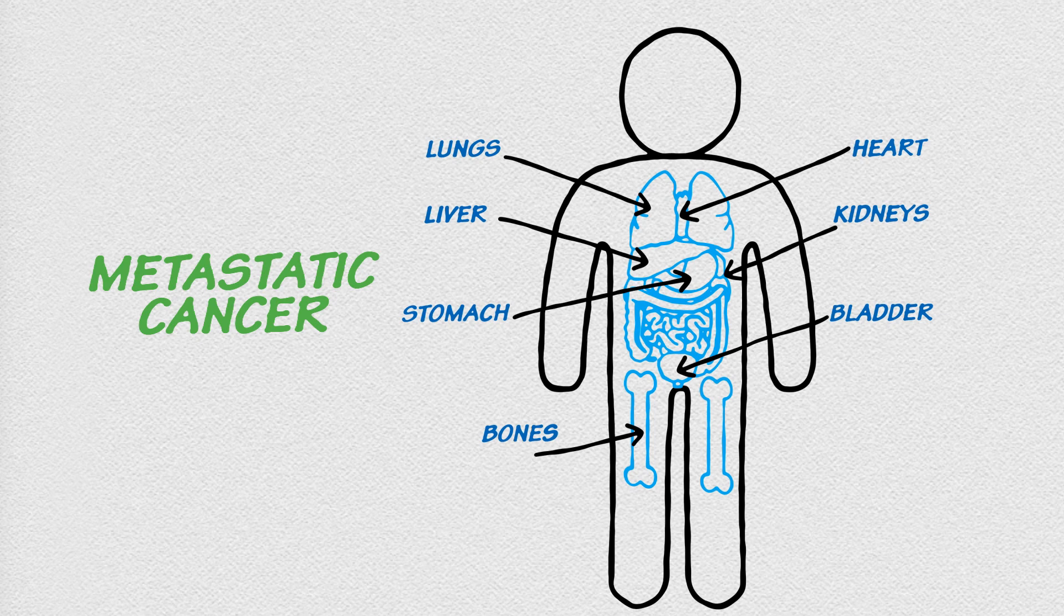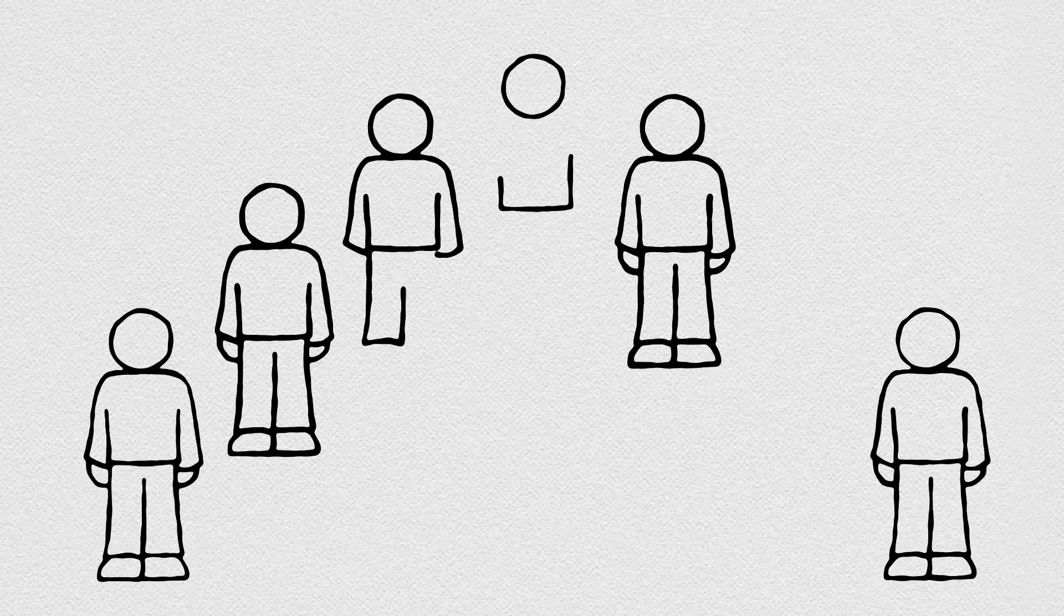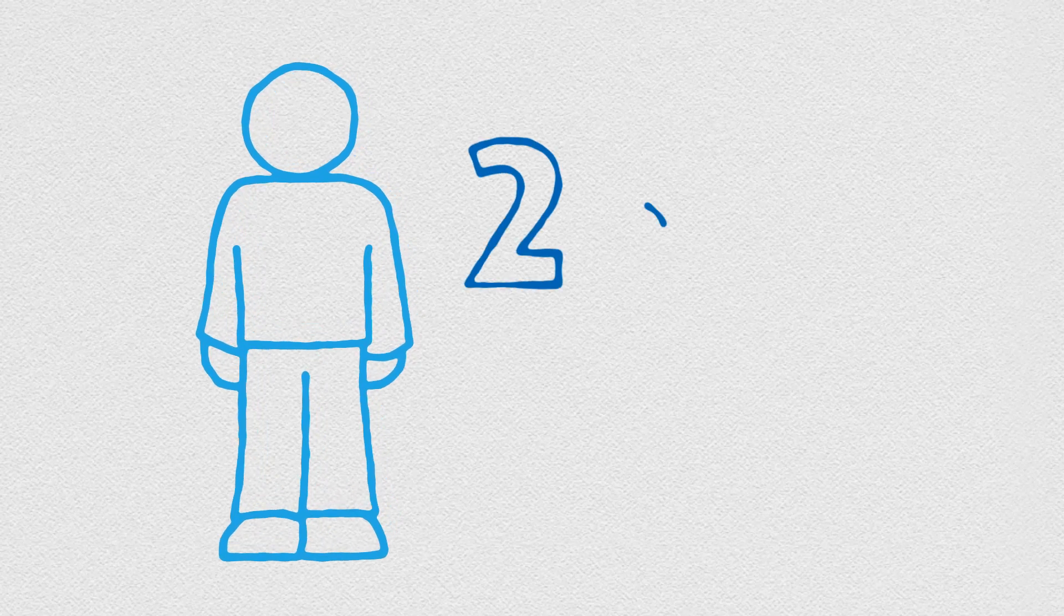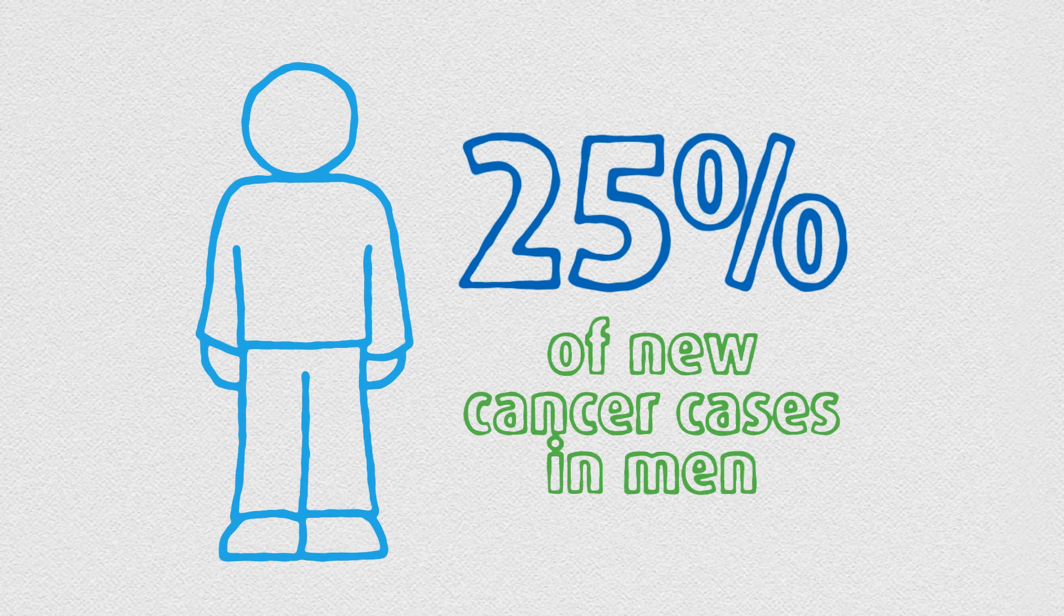This is called metastatic cancer, and this is how cancer kills. Prostate cancer is the most common cancer to affect Canadian men. One in seven will be diagnosed with the disease, which makes up about 25% of new cancer cases in men.